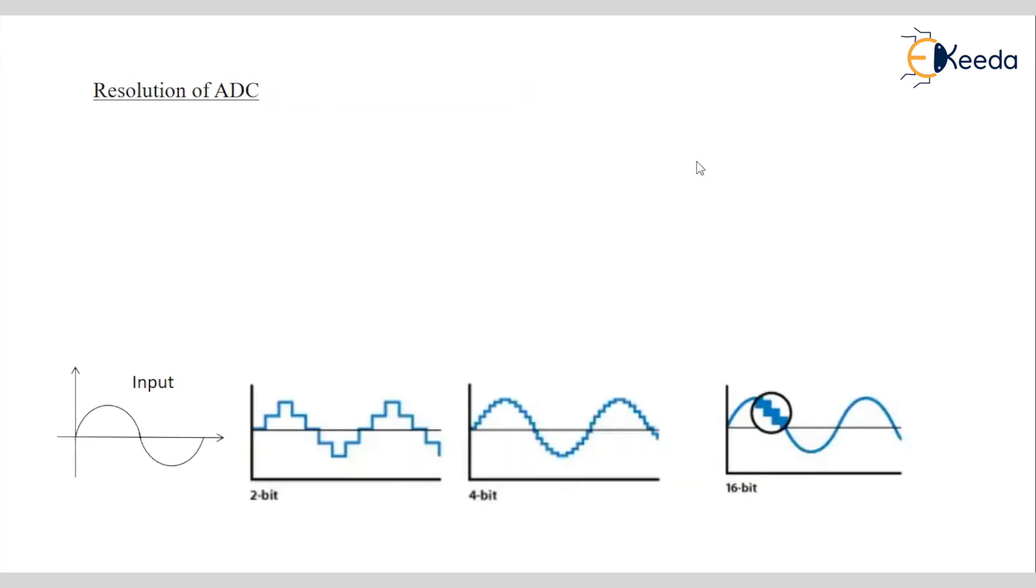Then next important topic is resolution of ADC. The ADC has N bit resolution where N can be 8, 10, 12, 16 or 24 bits. In earlier lecture, I have explained that analog input voltage with ADC 3 bit I have given. What I have given 3 bits.